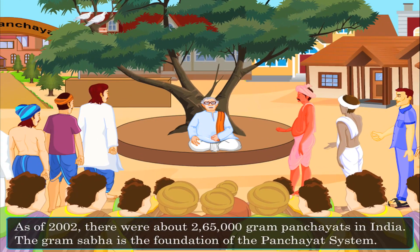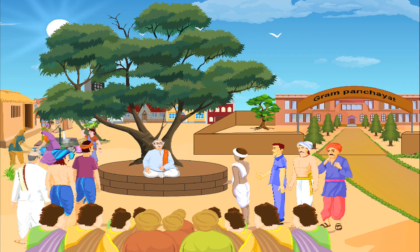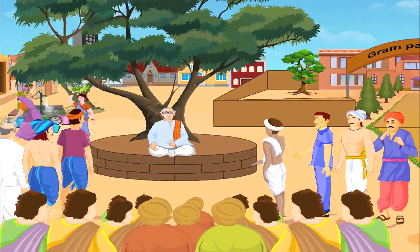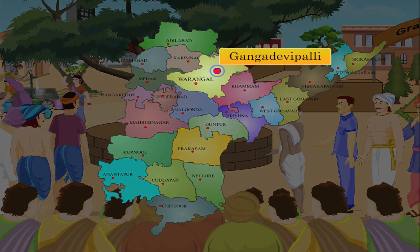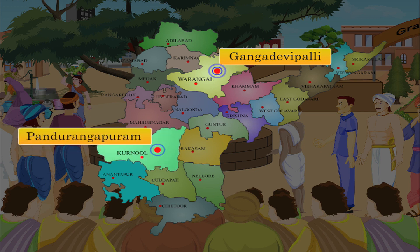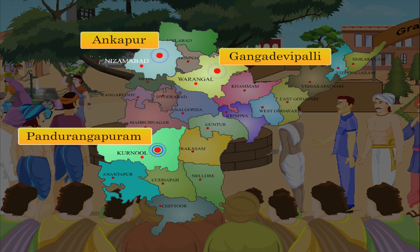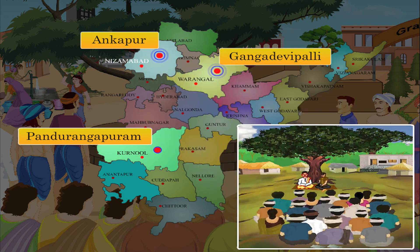The gram sabha is the foundation of the panchayat system. According to the constitution, the meeting of the gram sabha should compulsorily be held two times in a year. Our government has also notified the two dates on which the meetings should be held compulsorily: 14th April and 3rd October. Gram sabha can be held as and when necessary, as many times as possible depending on need. In Andhra Pradesh, Gangadevi Palli of Warangal district, Pandurangapuram of Kurnool district, and Ankapur of Nizamabad district conduct regular gram sabhas with active villager participation.